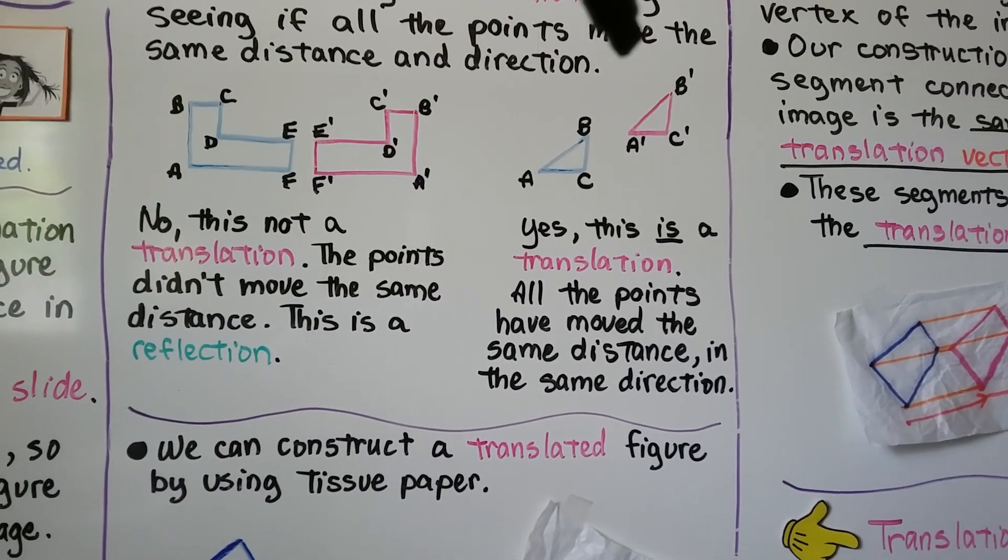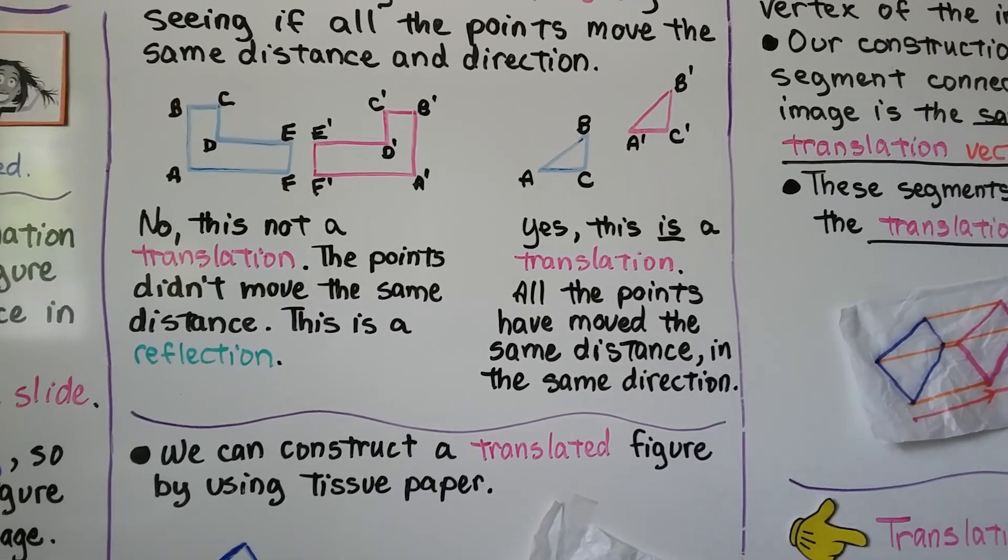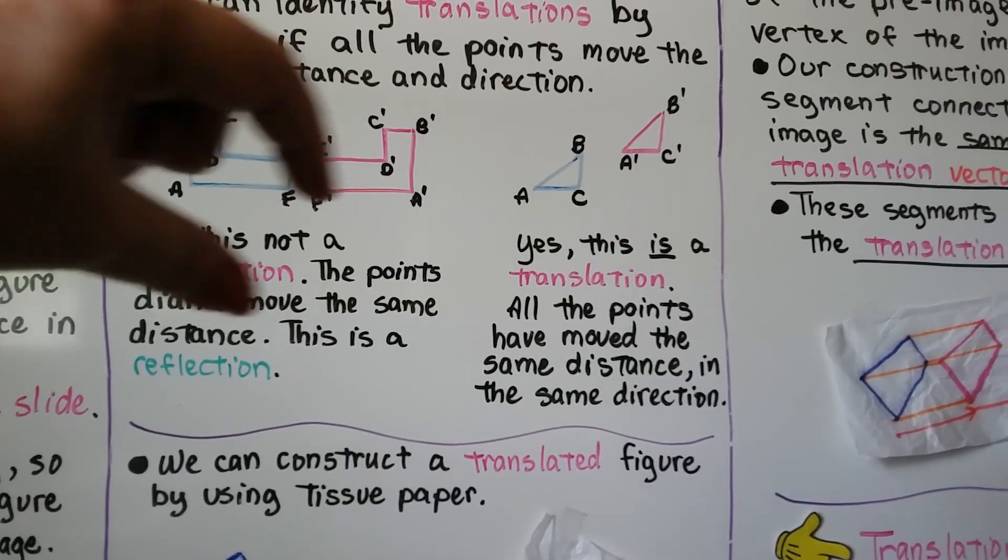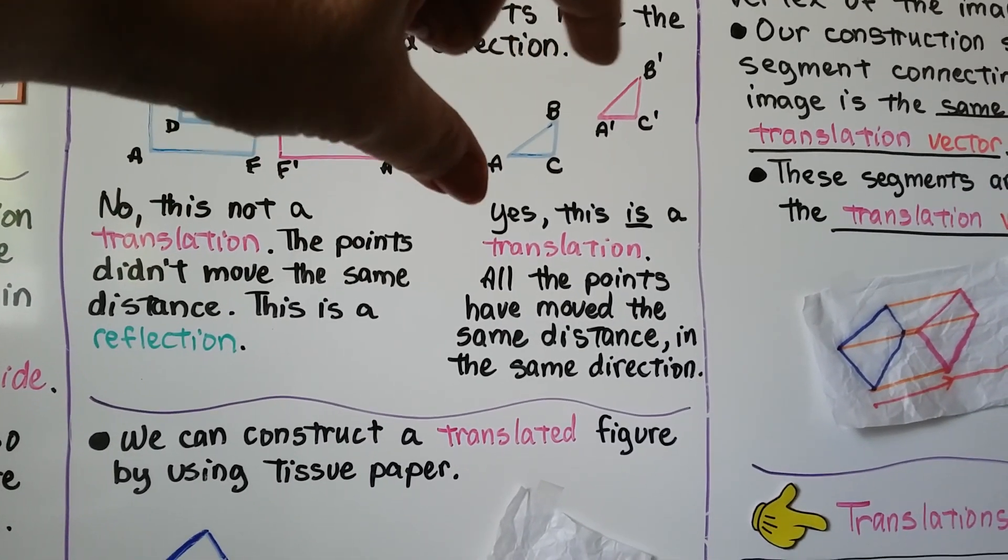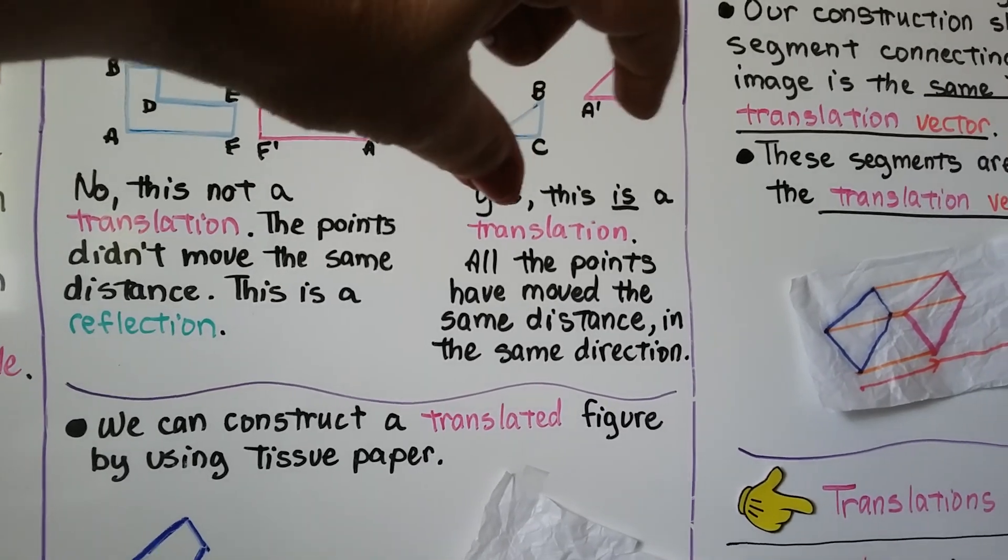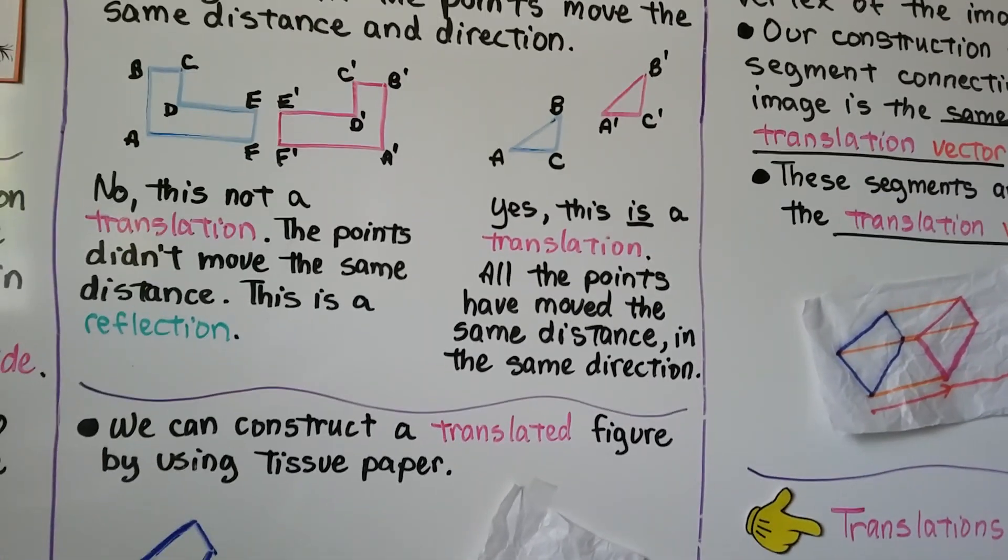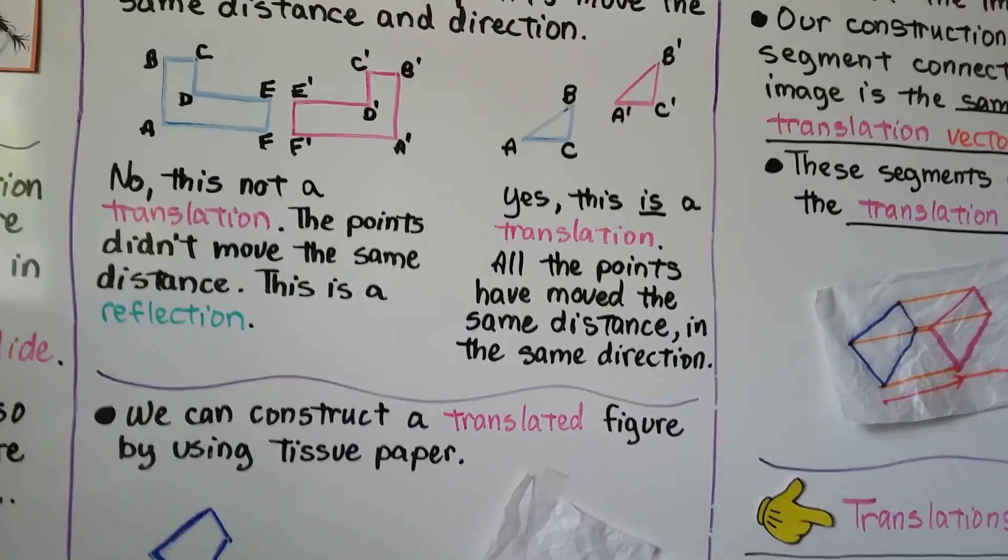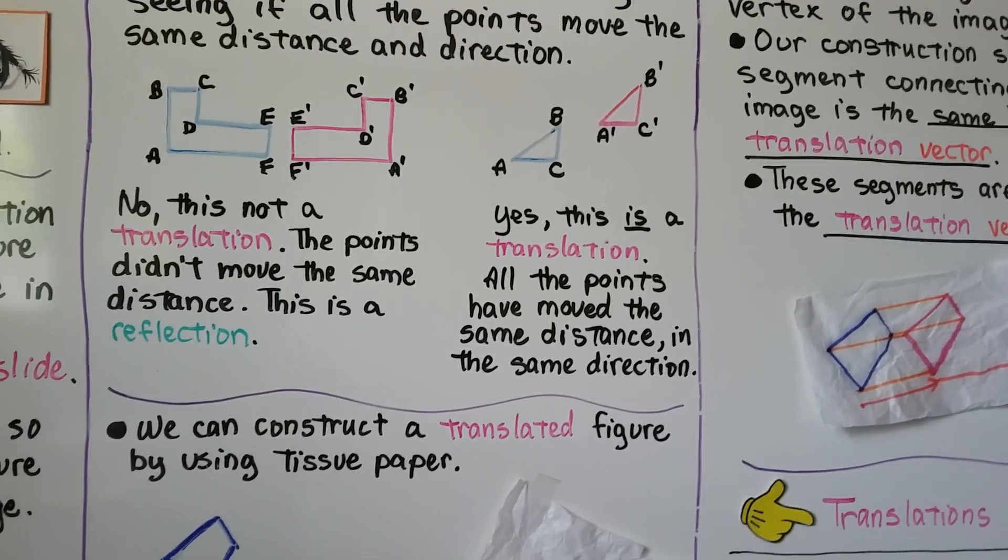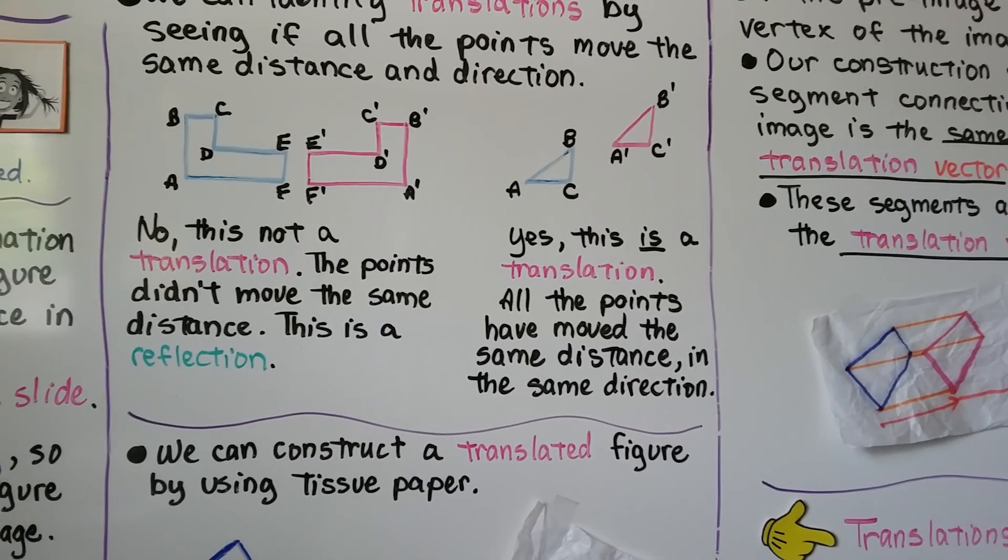Now look at triangle ABC and triangle A prime, B prime, C prime. Look at the distance between the points. If we measure the distance between A and A prime and compare it to B and B prime and C and C prime, they're all the same distance, and they're all in the same direction. So yes, this is a translation. All the points have moved the same distance in the same direction.